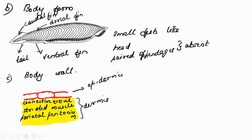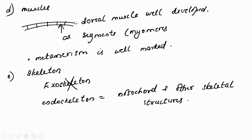Regarding the body wall: it is composed of epidermis and dermis. The dermis is composed of connective tissue, striated muscle, and parietal peritoneum. Regarding muscles: dorsal muscles are well developed, and the muscles exist in the form of segments called myomeres. This segmentation is called metamerism.